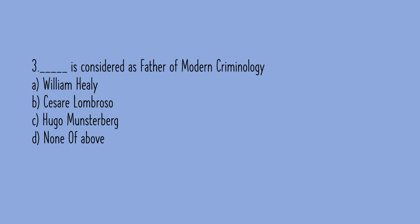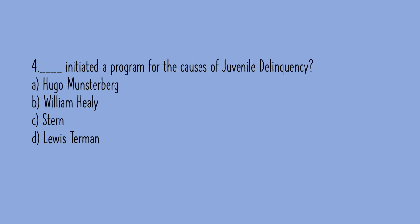MCQ 3: Who is considered the father of modern criminology? Option A: William Healy, option B: Cesare Lombroso, option C: Hugo Münsterberg, option D: none of the above. The correct answer is B, Cesare Lombroso. MCQ 4: Who initiated a program for the causes of juvenile delinquency? Option A: Hugo Münsterberg, option B: William Healy, option C: Stern, option D: Leo Sternman. The correct answer is B, William Healy.